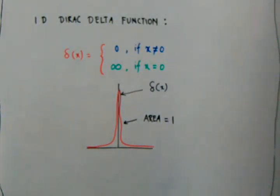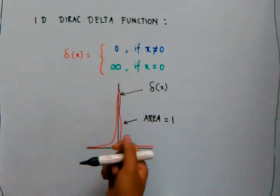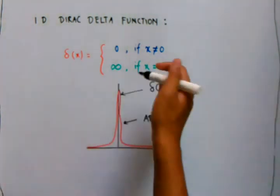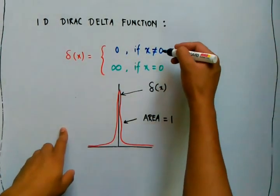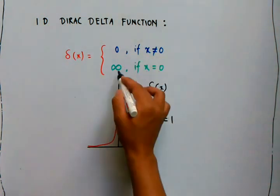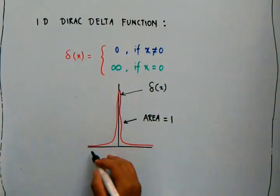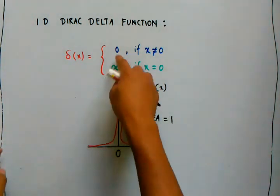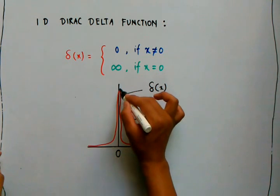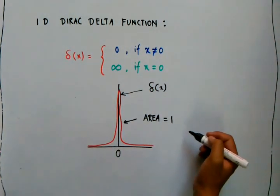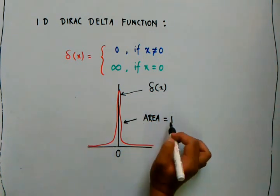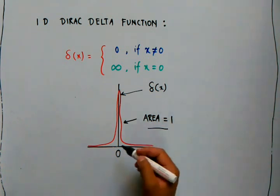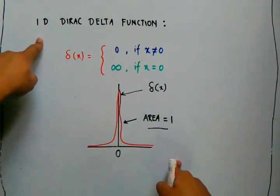In this video we are going to talk about the one-dimensional Dirac delta function. We represent it by δ(x). Its value is zero at any point other than x=0, and at zero its value tends to infinity. From the graph we can see that at any point other than zero the value is zero, and at zero it tends to infinity. By definition, the area under the Dirac delta function is equal to one.